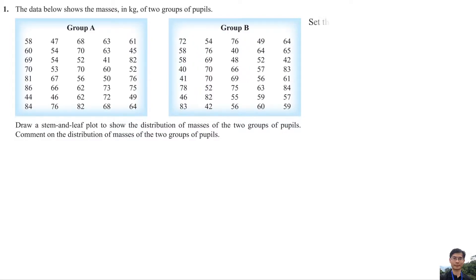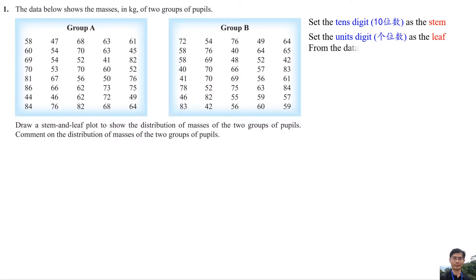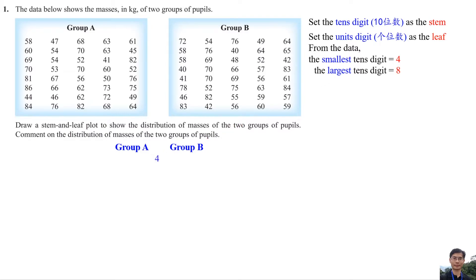We set the tens digit as the stem and the units digit as the leaf. From the data, the smallest tens digit is 4 and the largest tens digit is 8. So we write Group A and Group B, with the stem in the center, starting with number 4, then number 5, number 6, number 7, and lastly number 8.